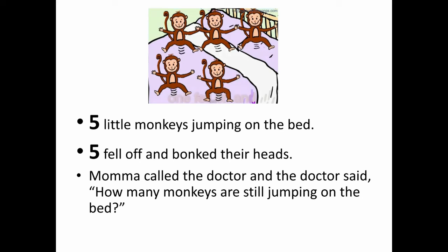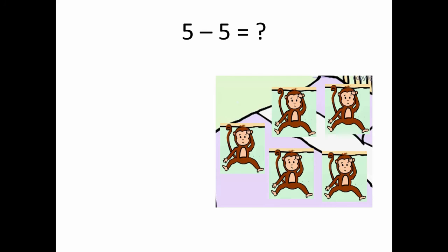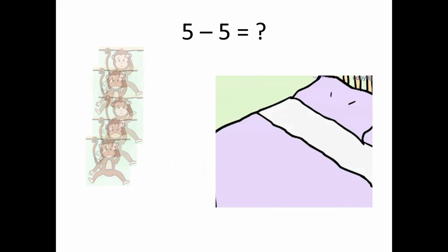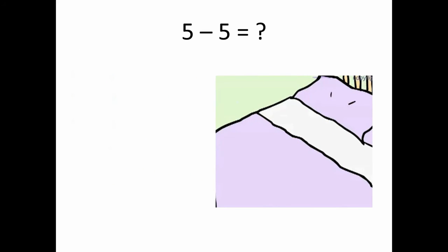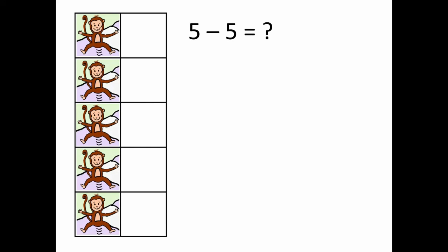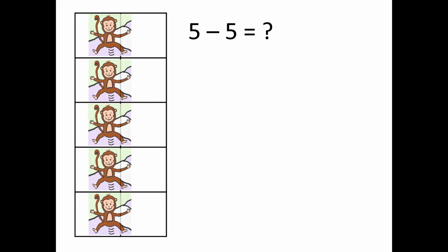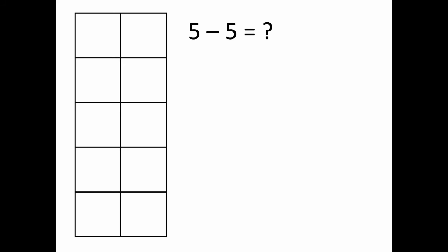Five little monkeys jumping on the bed, five fell off and bonked their heads. Mama called the doctor and the doctor said, how many monkeys are still jumping on the bed? If there are five monkeys and all five fall off, what's going to happen? They're gone! So five minus five is the same as zero.